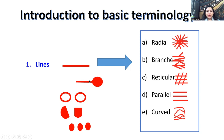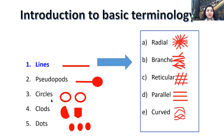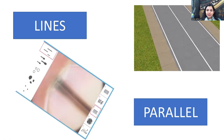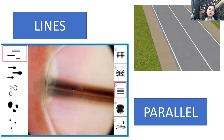Parallel lines in dermoscopy are visible in nail dermoscopy — on onychoscopy. You can see shades of brown — no gray, no blue — only brown, and these lines run parallel to each other. The band widths are almost the same, though color varies. This is a subungual nevus — an example of parallel lines.